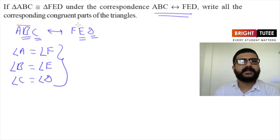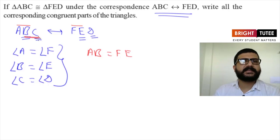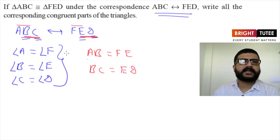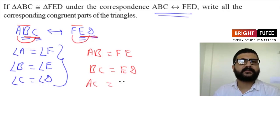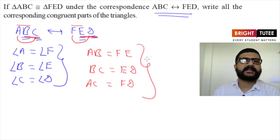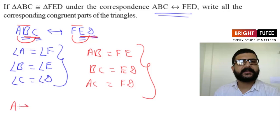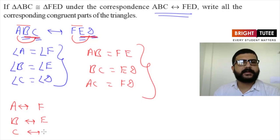For the corresponding sides: AB is equal to FE, BC is equal to ED, and AC is equal to FD. The corresponding vertices are: A corresponds to F, B corresponds to E, and C corresponds to D. These are the corresponding congruent parts of the two triangles.